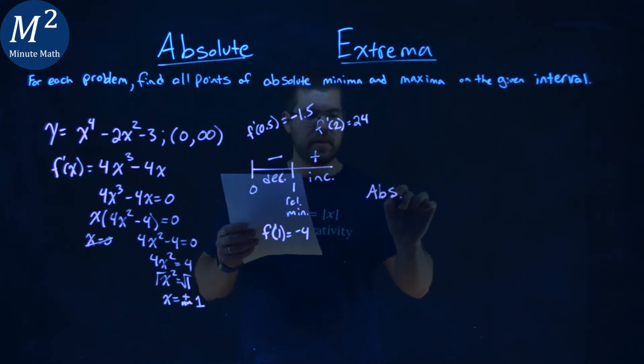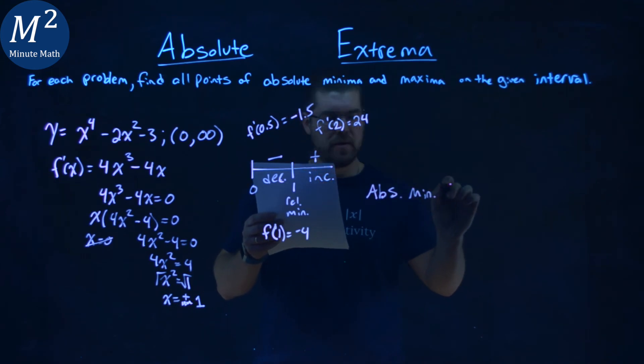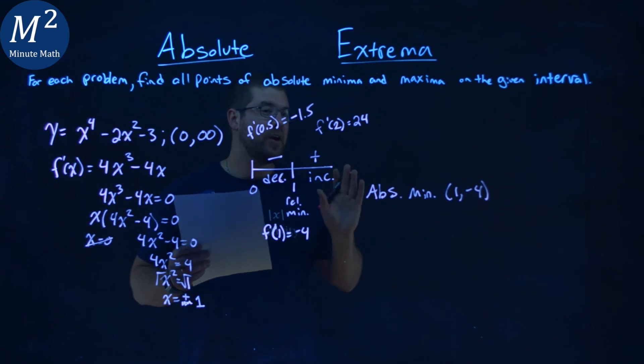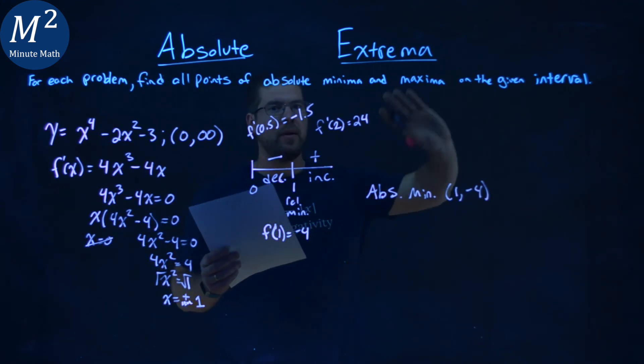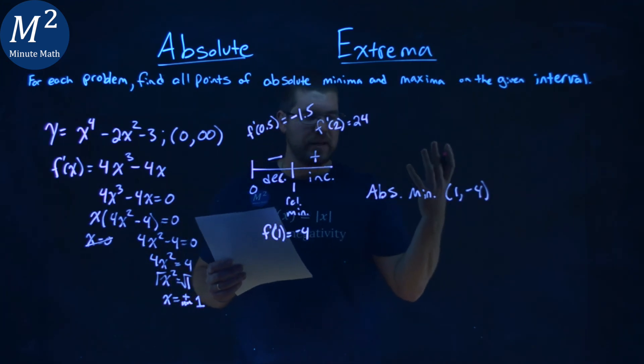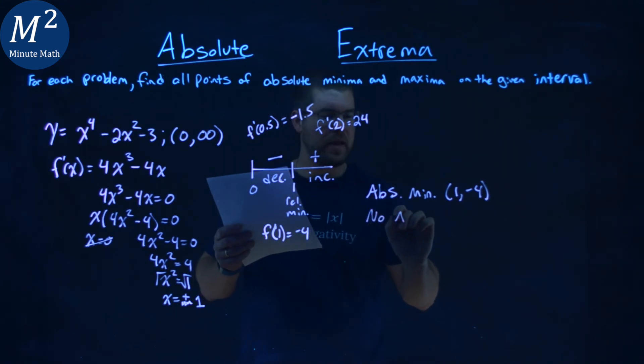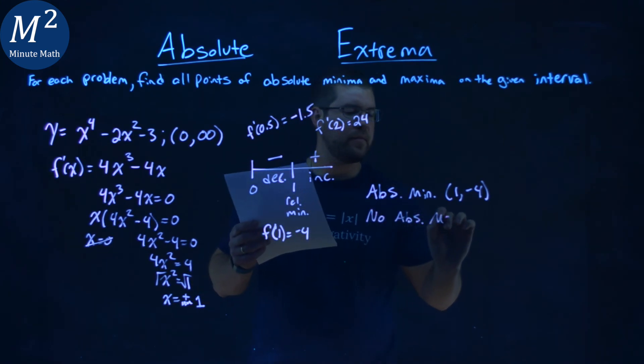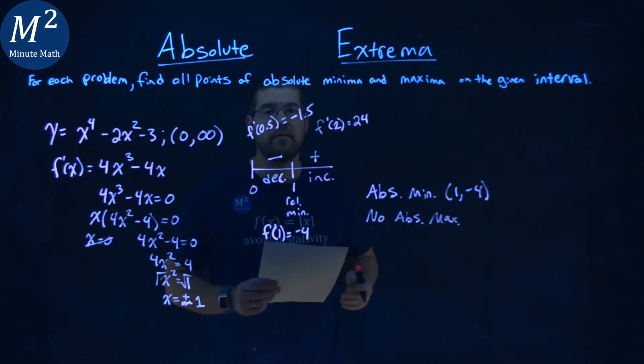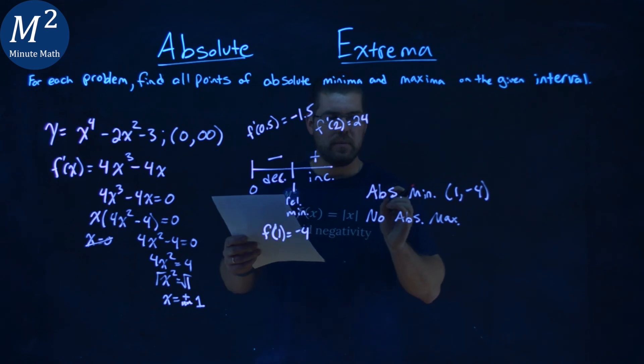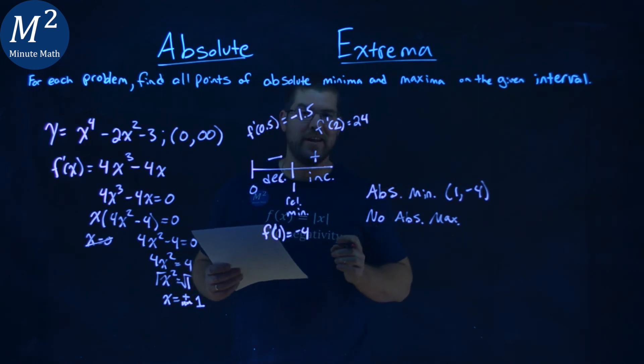So, our absolute minimum here is 1, negative 4. And as far as absolute maximum, we actually don't have one, because it's going up to positive infinity forever. We can't really hit that value or state it. So, we have no absolute max. Again, my final answer here is absolute minimum of 1, negative 4. And an absolute maximum, well, we don't have any there.